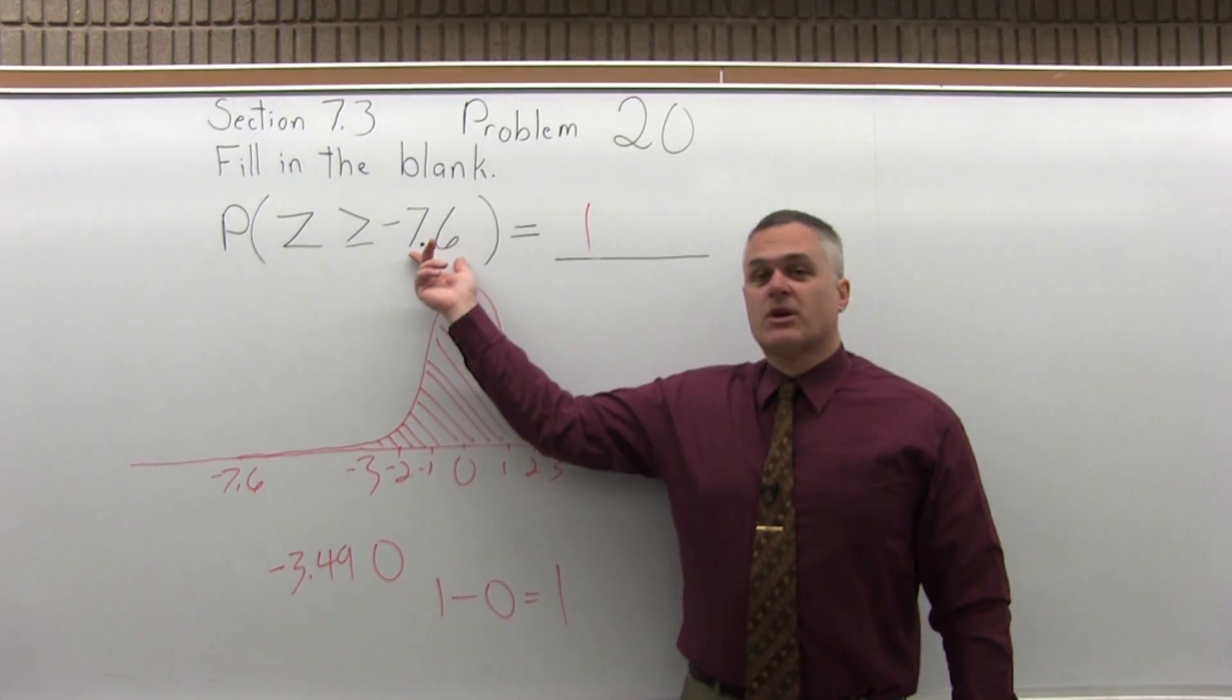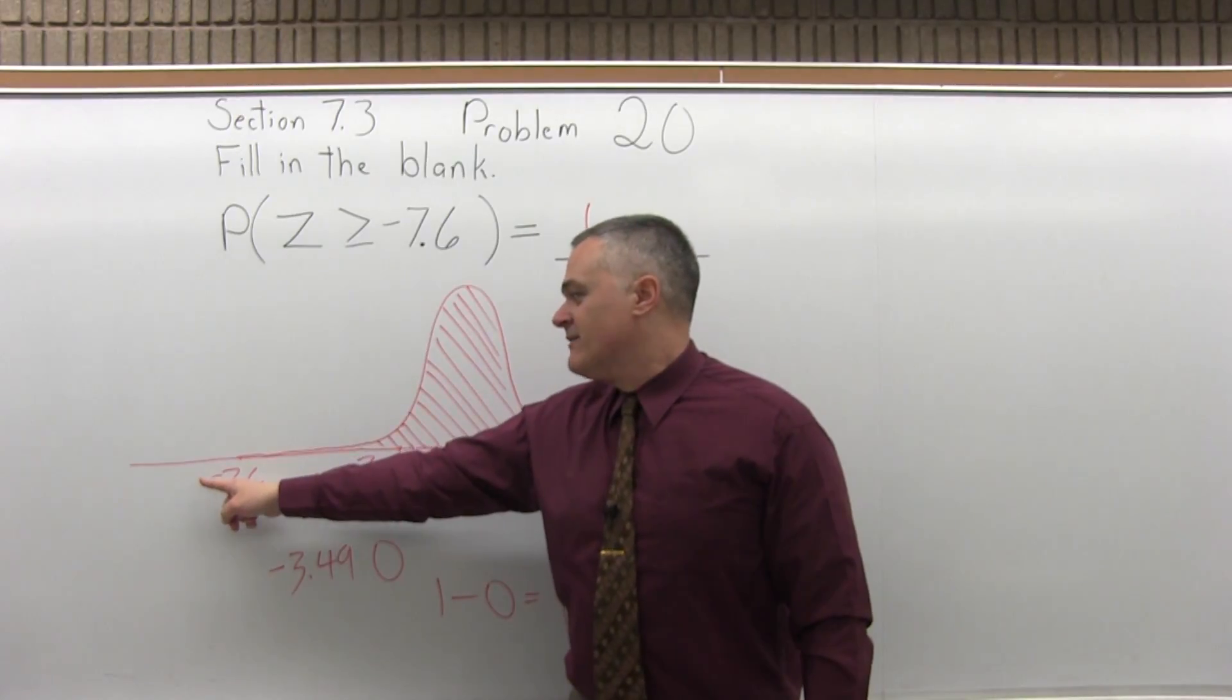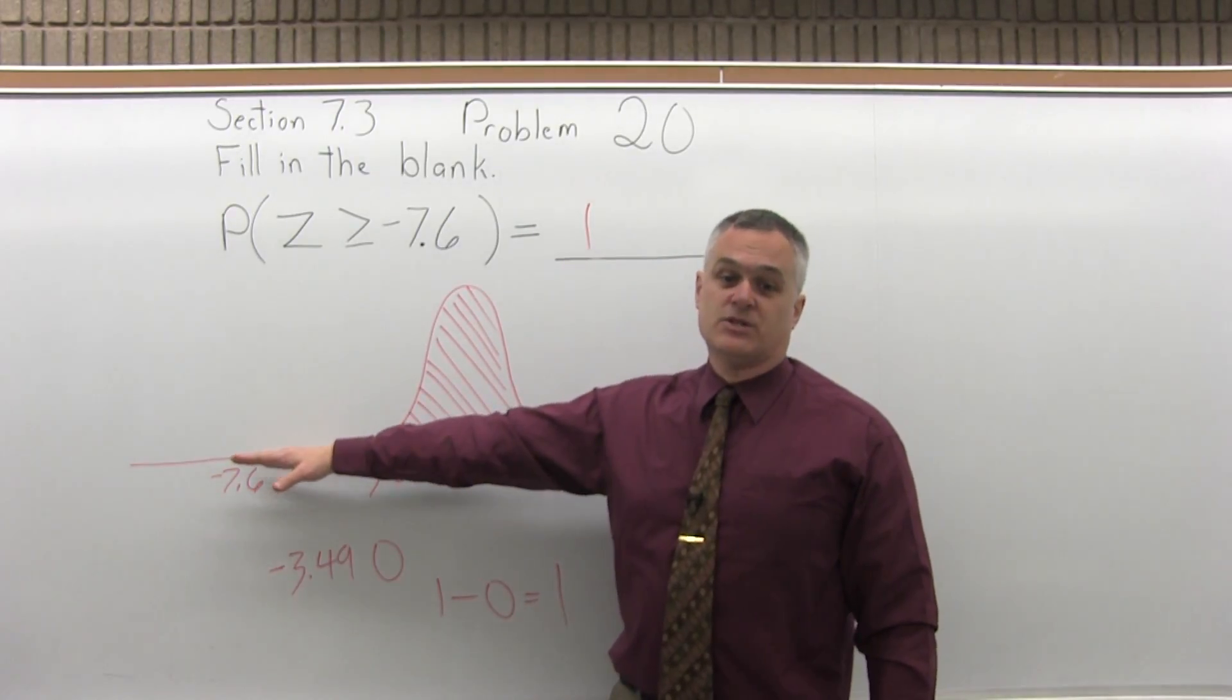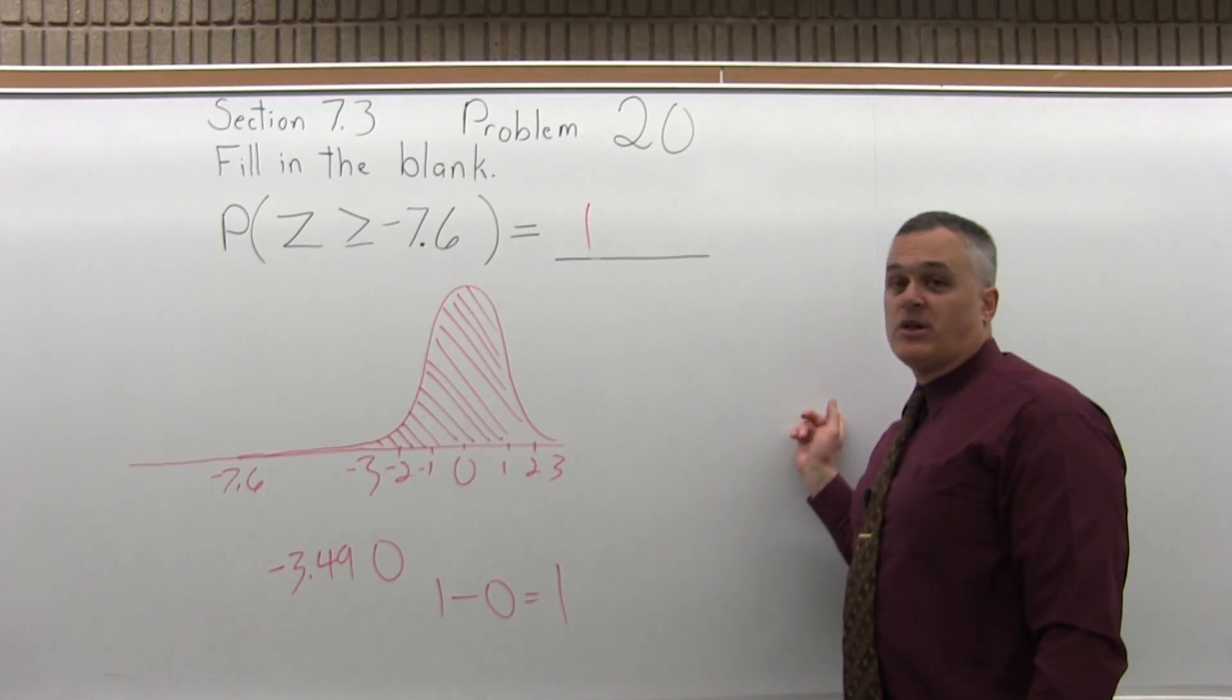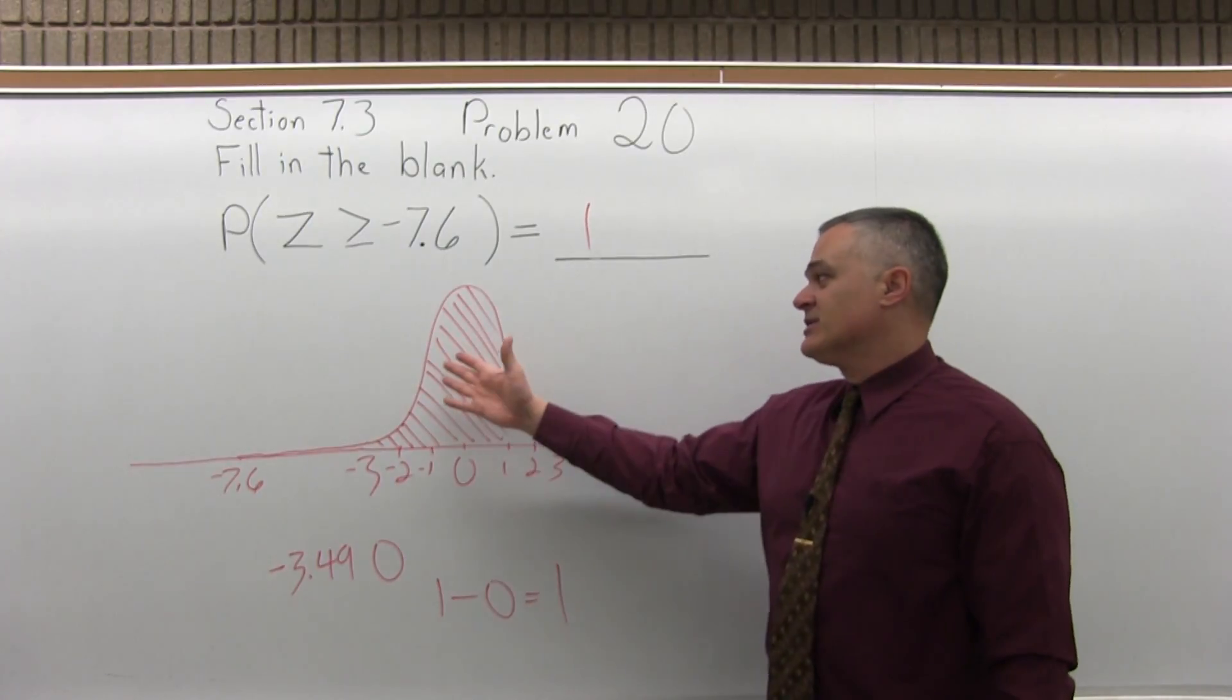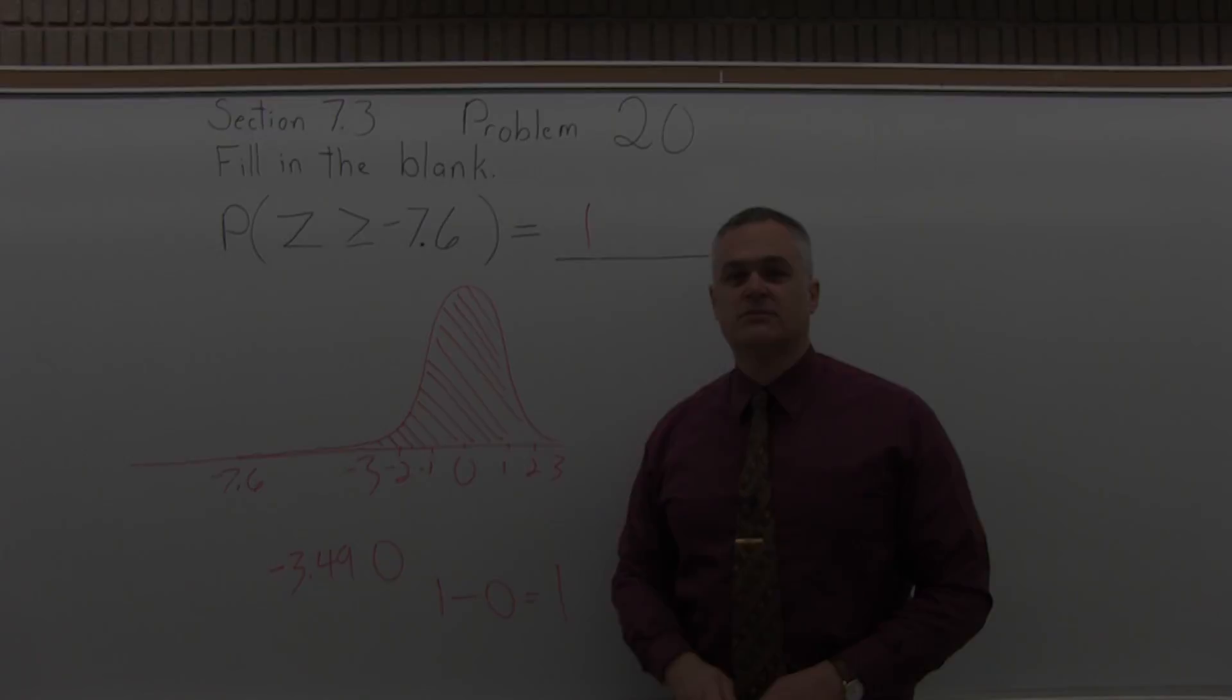Again, this is not an uncommon occurrence. When you go too far off the chart on the negative end, the answer from the chart is 0. So if it's smaller, the answer is 0. If it's greater than, like this, the answer is 1. And when you go off the chart on the positive end, the answer is 1. So if it's less than, the answer is 1. If it's greater than when you go off on the positive side, it would be 0.